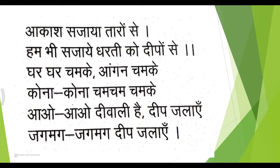Gargar chamke aangan chamke. Kona kona cham cham chamke. Gar means house, aangan means entrance, kona means corner of the house. Gargar chamke means the house shines, aangan chamke means the entrance shines, kona kona cham cham chamke means every corner of the house shines.